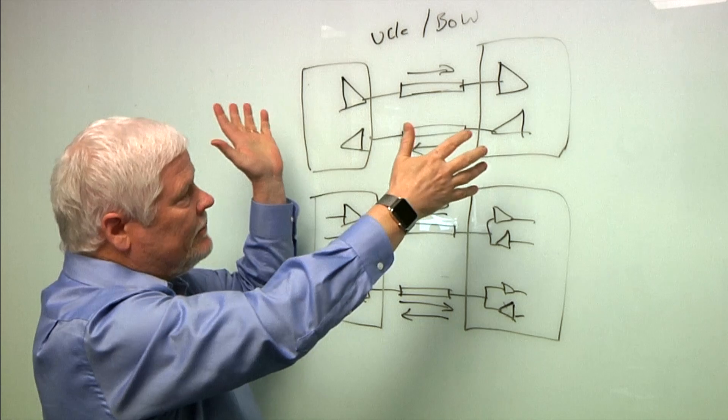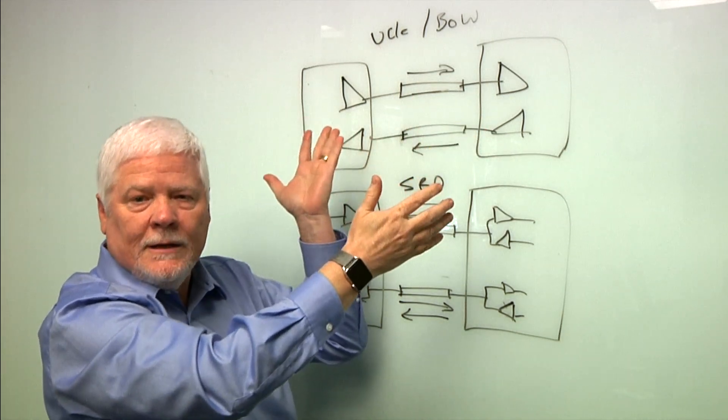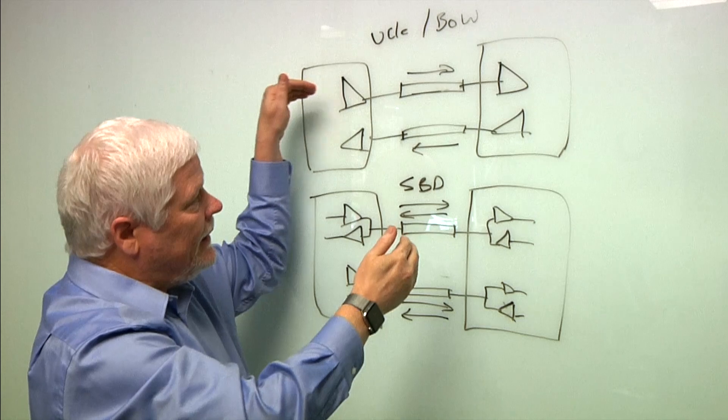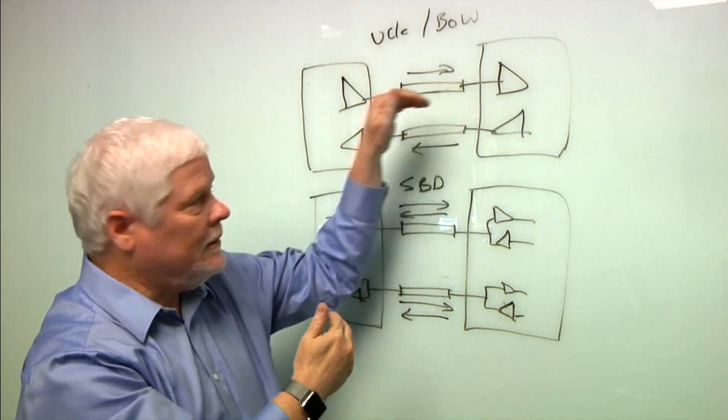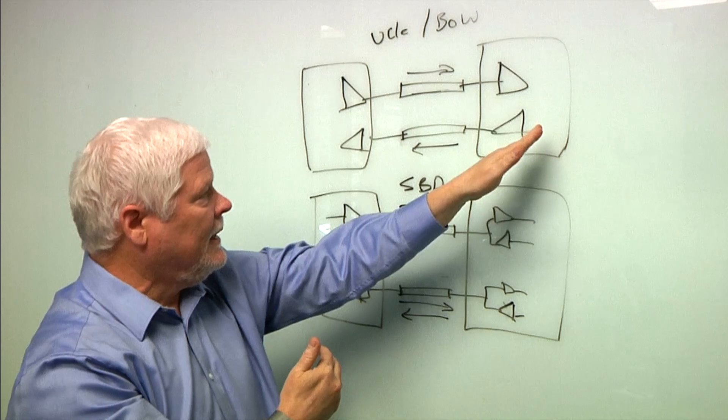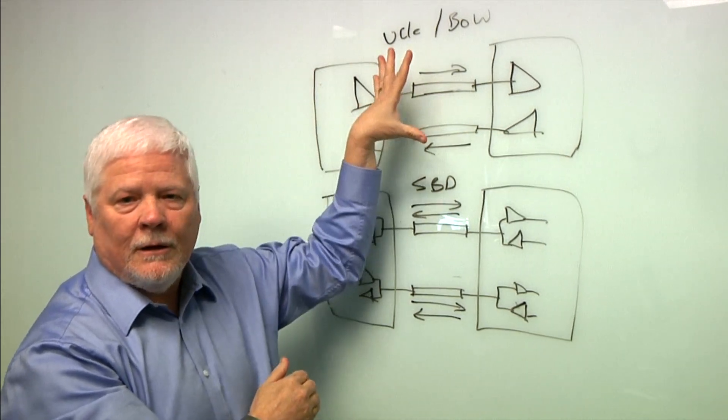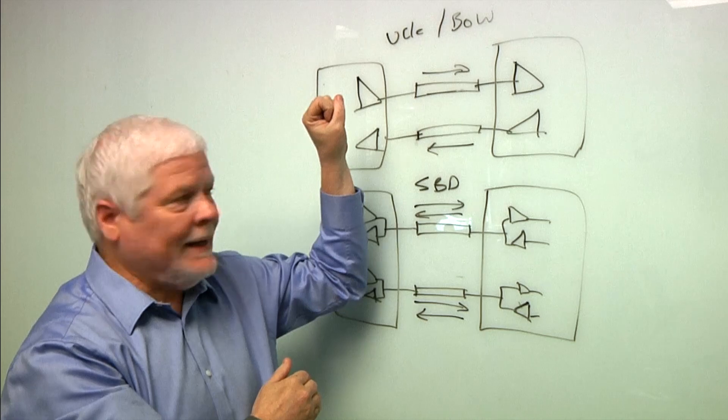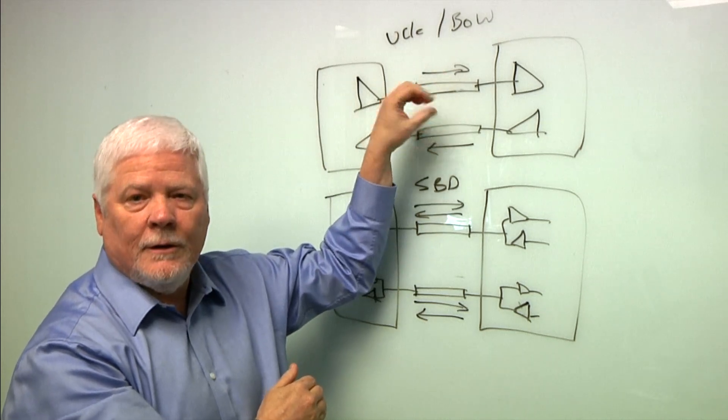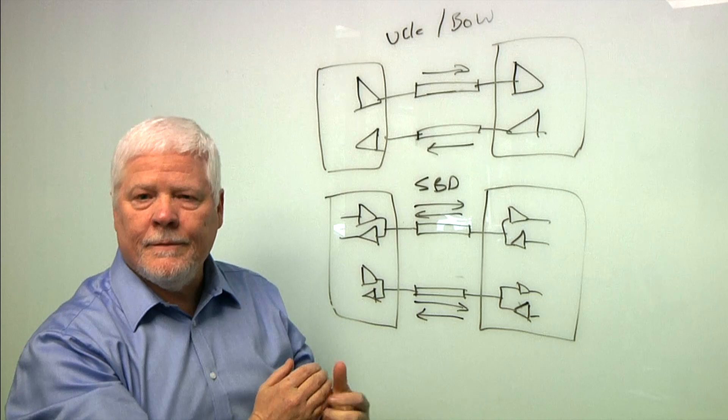And on the top, I'm showing a standard UCIE or a bunch of wires interface where each wire is carrying data in one direction. You have a transmitter connecting, transmitting data to this chiplet, a transmitter transmitting data back to this chiplet. And that's very common in the industry. That gives you a certain amount of bandwidth per wire. But you've got a lot more data now to deal with, too, right?